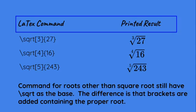Commands for roots other than square roots still have the square root as the base. Seems a little strange, but you get used to it. The difference is that brackets are added containing the proper root. In the first example, square root with three in the bracket—that's a cube root—but 27 is still in the curly brackets indicating what should go underneath the radical sign. And here I have the fourth root and the fifth root, but you can have whatever you want there.